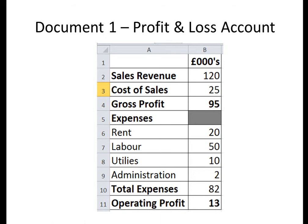Cost of Sales is another word for variable costs — costs that can be directly attributed to making the product or service, such as materials. If we take Sales Revenue and take away Cost of Sales, that gives us Gross Profit. In this example, £120,000 take away £25,000 gives us a Gross Profit of £95,000.